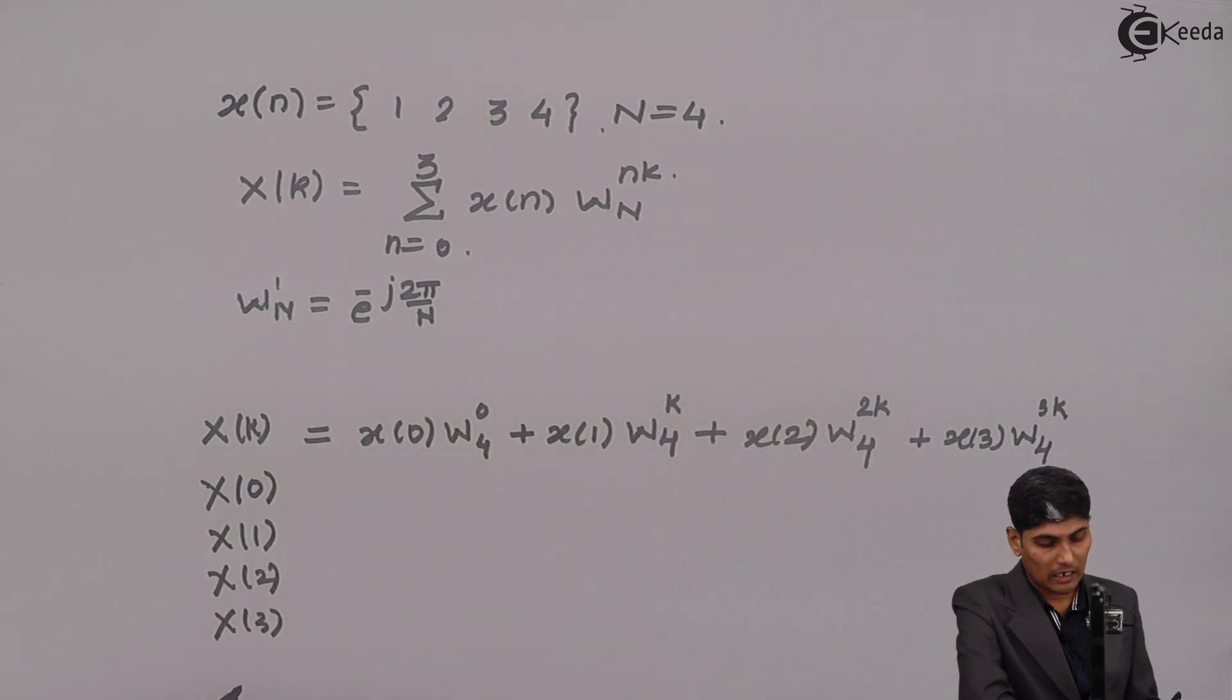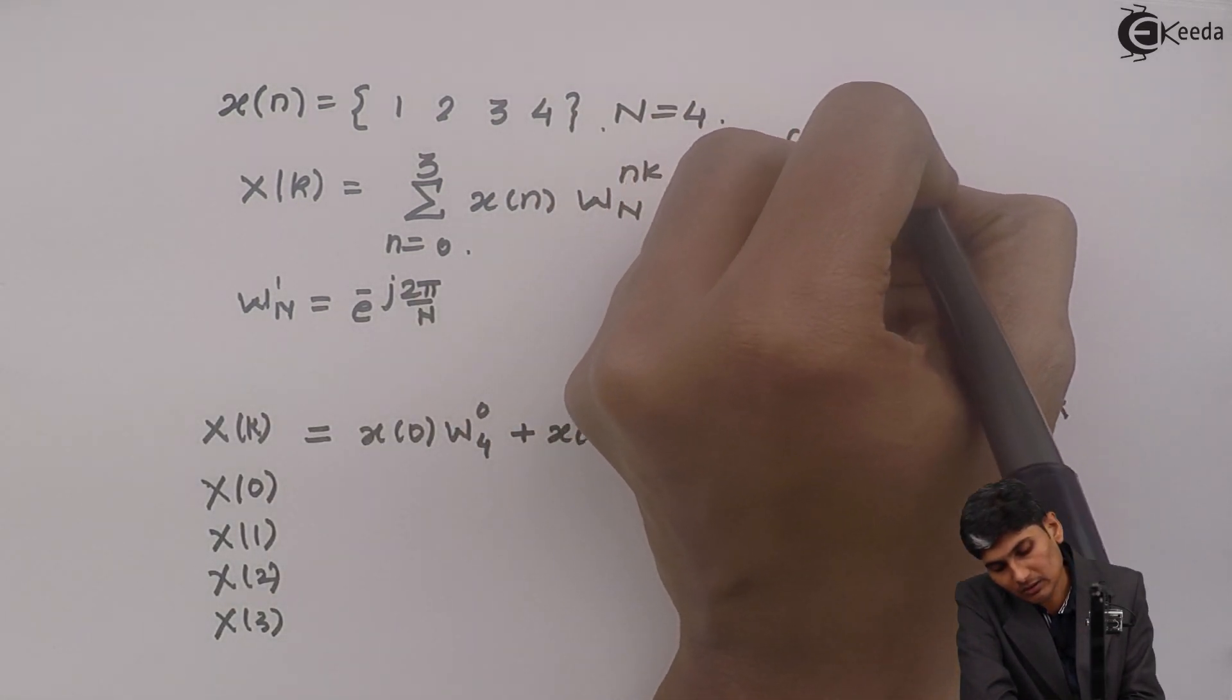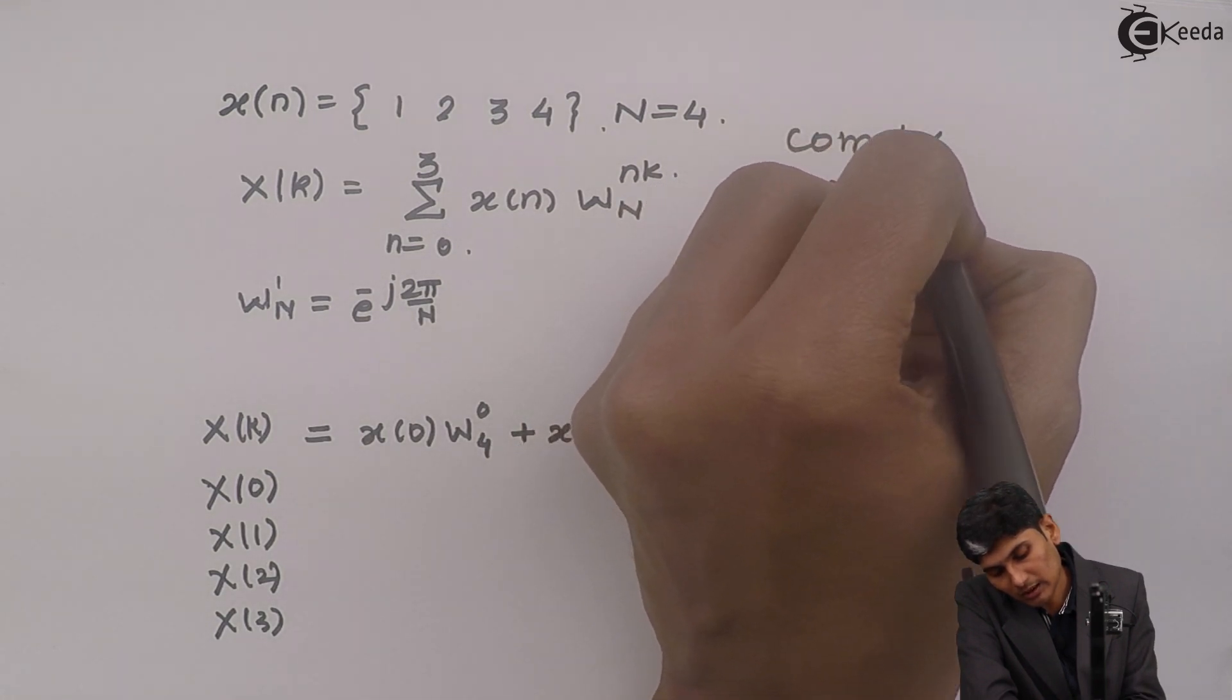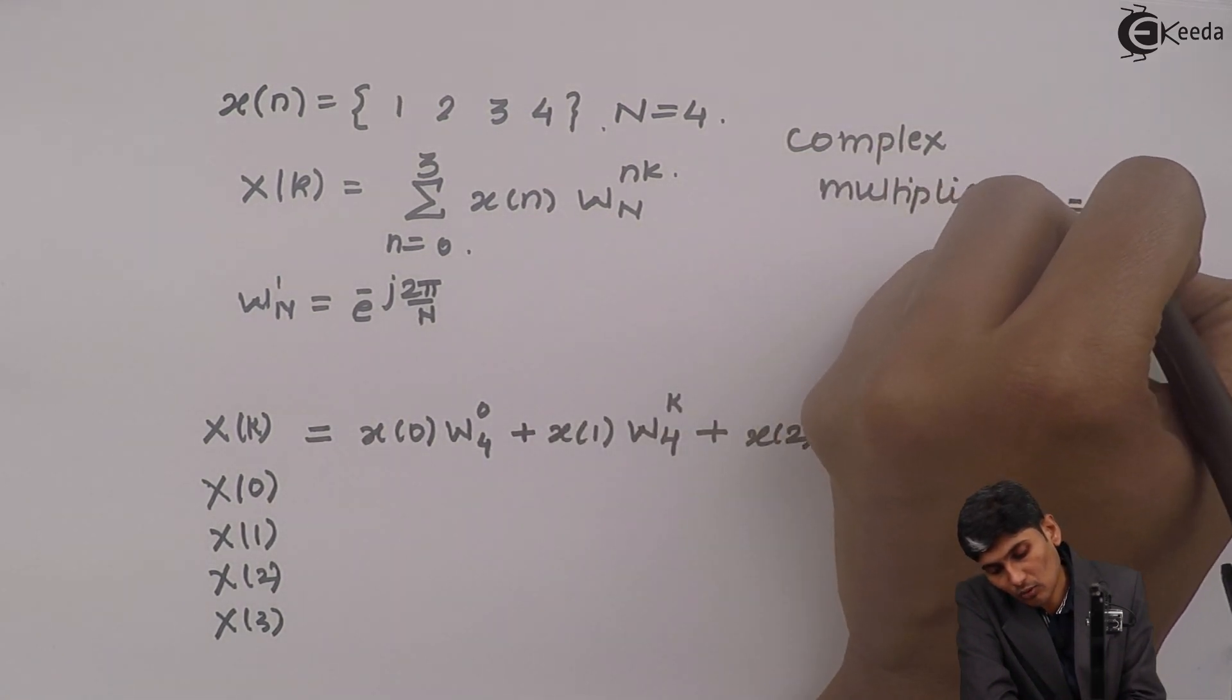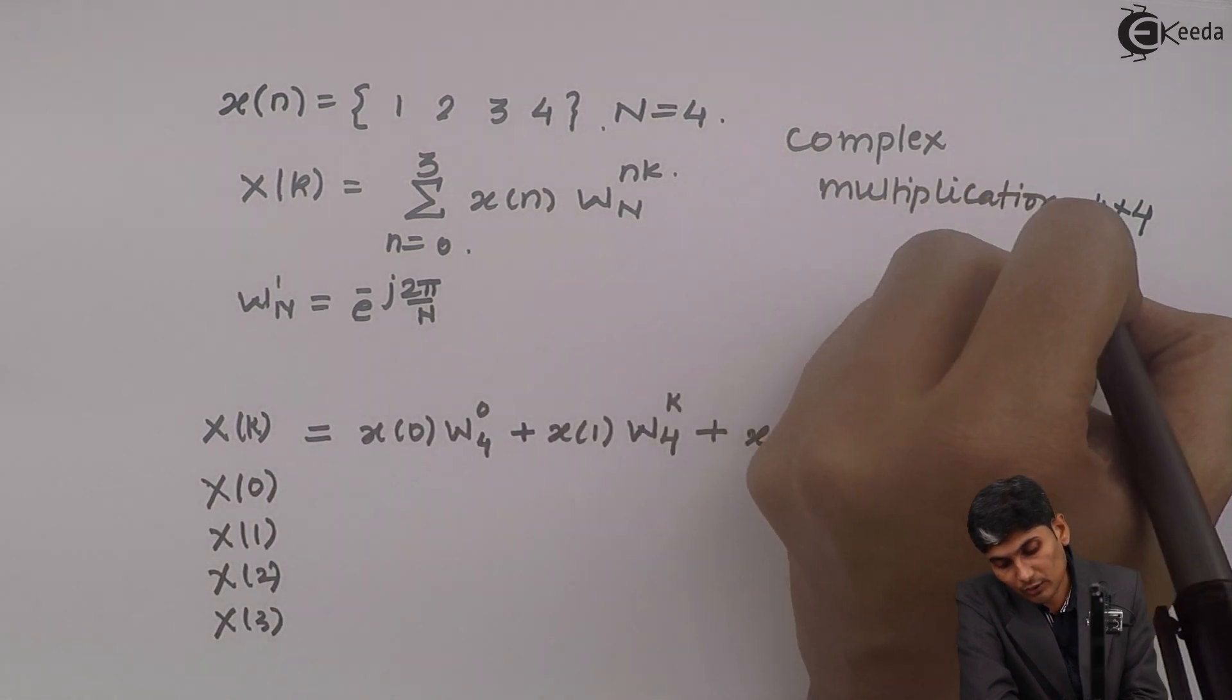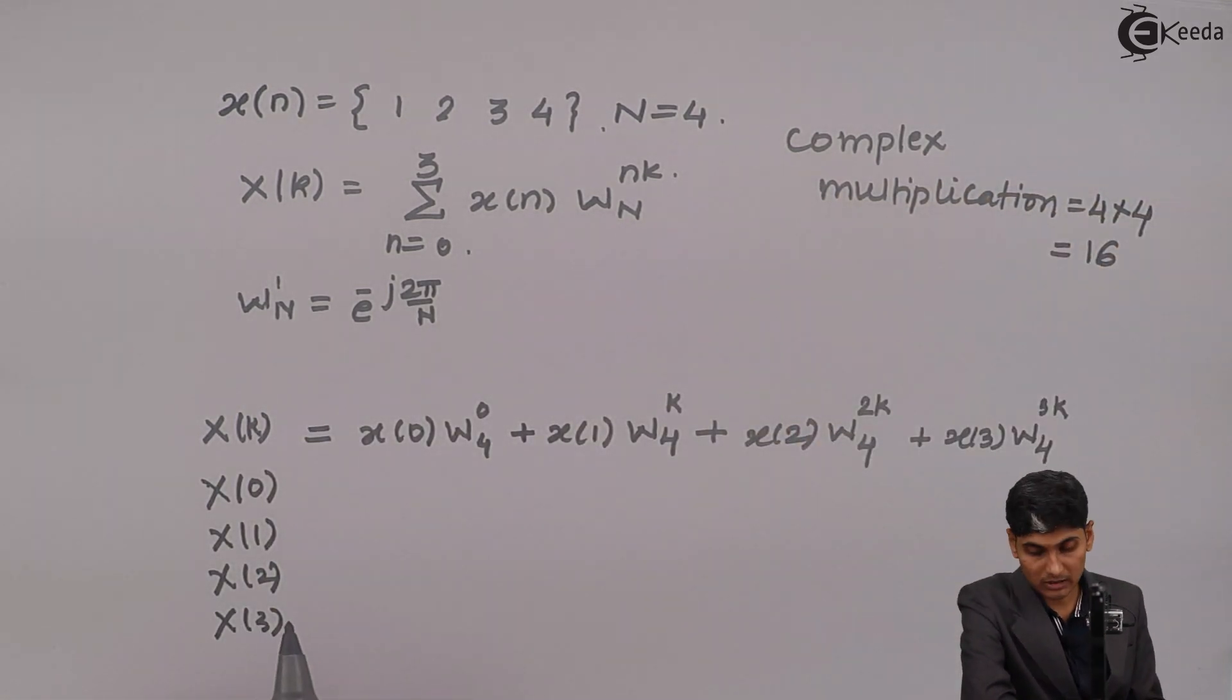So these 4 multiplications which are complex multiplications are repeated 4 times. So I have total complex multiplications, 4 into 4, which is nothing but 16 complex multiplications.